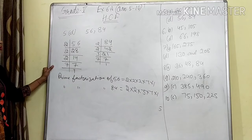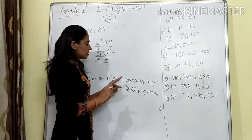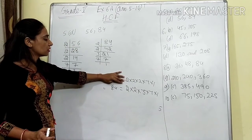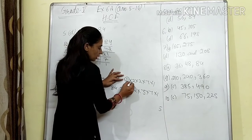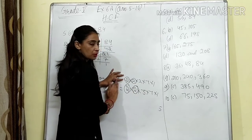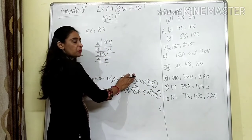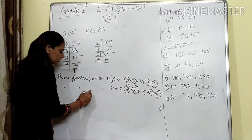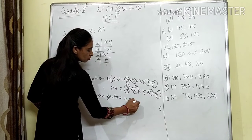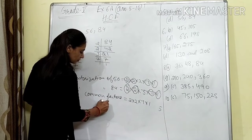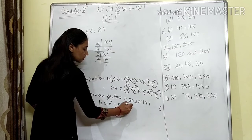Now we have to select the common factors, because HCF means Highest Common Factor. We always start from the first number — here 56 — and compare each factor with the other. Two is here and here also. Another two is here and here also. The third two is not in 84, so that pair is not made. Seven is here and here also. Three is only in 84, not in 56. So common factors are 2 × 2 × 7 × 1 = 28. HCF of 56 and 84 is 28.